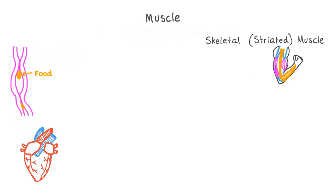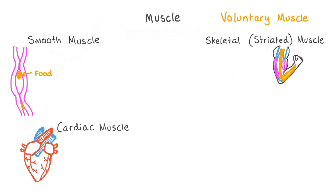There are three main different types of muscle which carry out these different functions: skeletal muscle, which is sometimes called striated muscle, smooth muscle, and cardiac muscle. While skeletal muscles are under our conscious control and so are called voluntary muscles, smooth muscle and cardiac muscle are involuntary muscles — they're controlled subconsciously and we cannot decide to simply stop them from working.